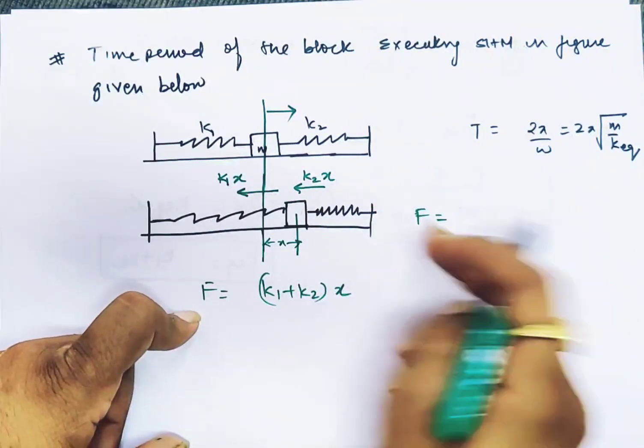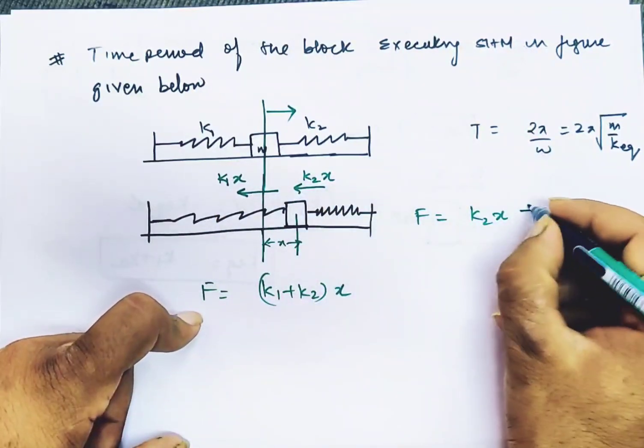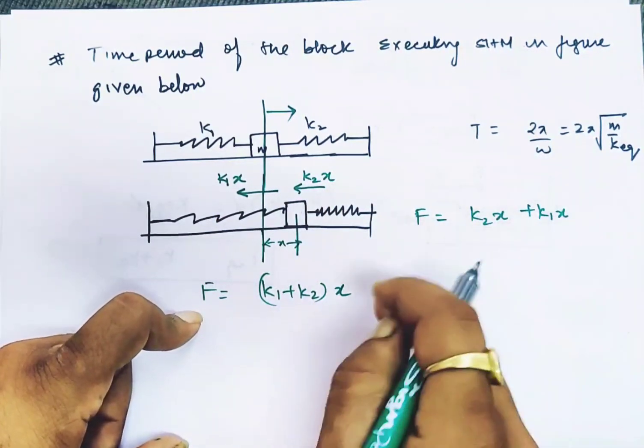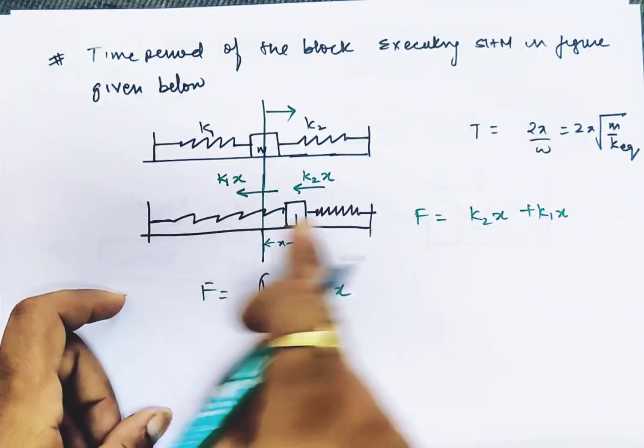The net force combines both springs. If you press this spring, you count it. If you press that spring, you count it. Because the direction is the same, the forces add.